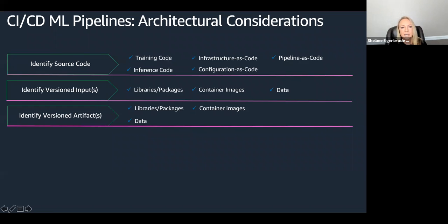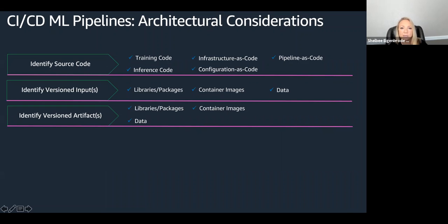The reason you see data as both a versioned input as well as an artifact is that our pipelines are typically going to include a data processing step. That data processing step is typically going to take raw data, process it into the formats expected for training. That step may have multiple tasks within it for data transformations, cleansing, and so on. Essentially, the reason data becomes a versioned artifact is that while that particular dataset may be input into your data processing task, it's also an artifact that's used by your training step — it's a dependency inside your training step to have that processed data.